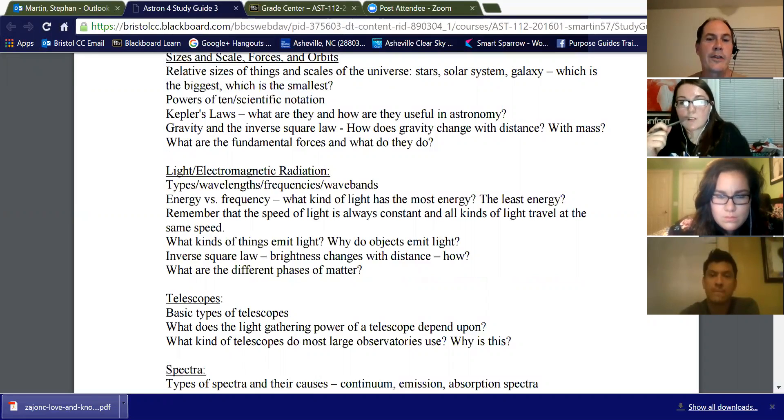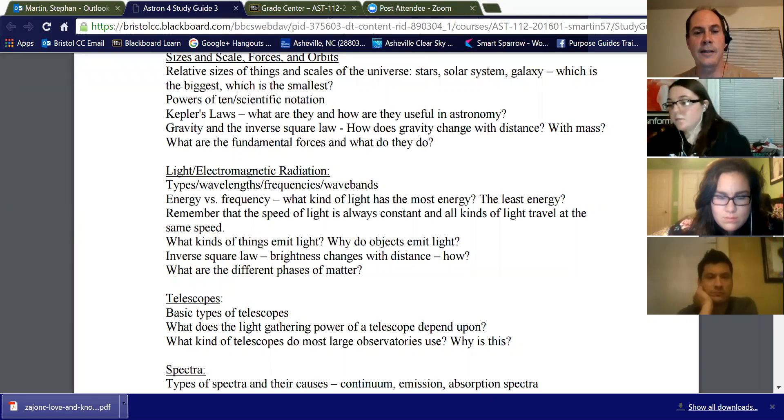Now, the second line here, energy versus frequency, energy is proportional to frequency. So the higher the frequency of light, the more energy it has. So blue light has more energy than red light because it has a higher frequency. So for the whole spectrum, what kind of light has the most energy? Gamma rays because they have the highest frequency. Least energy would be radio waves because they have the lowest frequency.